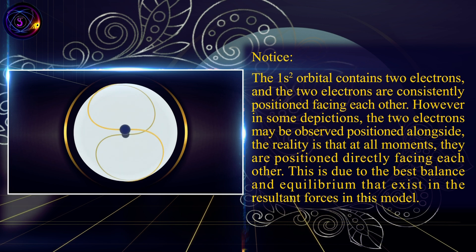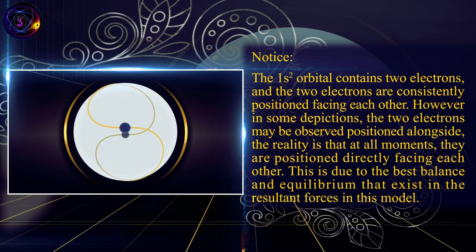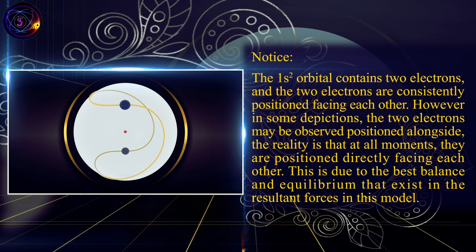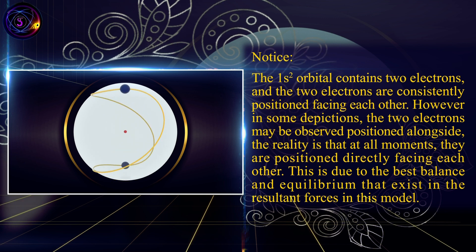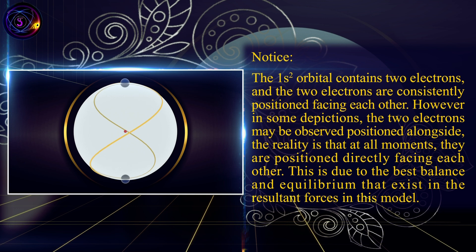However, in some depictions, the two electrons may be observed positioned alongside. The reality is that at all moments they are positioned directly facing each other. This is due to the best balance and equilibrium that exists in the resultant forces in this model.